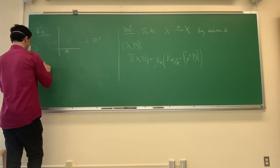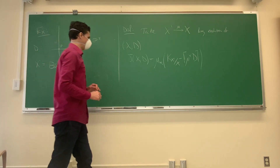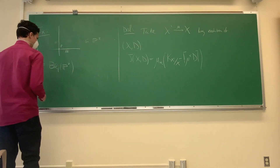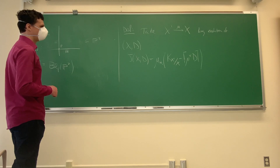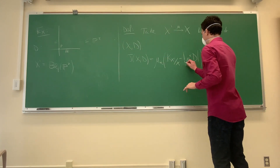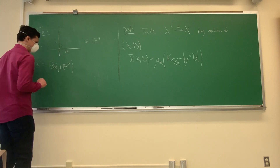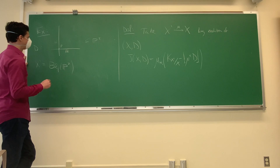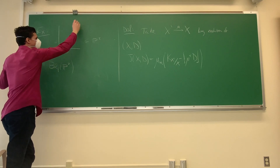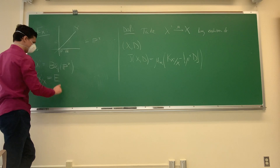For X', we take the blow-up at the point p of our surface P². To calculate K_{X'/X}, that's just the exceptional divisor of the blow-up — this is the standard adjunction formula for surfaces. You blow up once and get E, which is the negative of an ample divisor over the base. When you push it forward everything goes away.